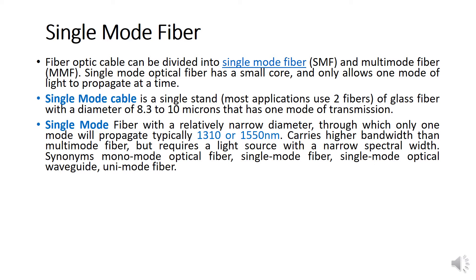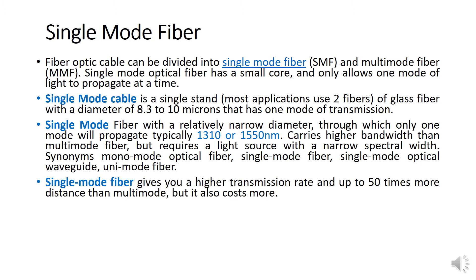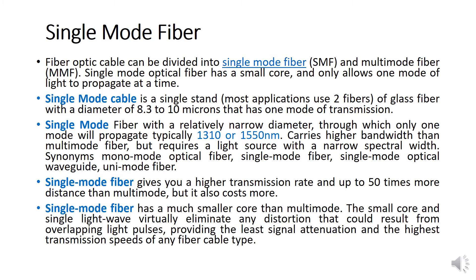Single mode gives a higher transmission rate, up to 50 times more distance than multi-mode, which makes the cost more beneficial depending on the company and project. Single mode fiber has a much smaller core, and the single light path virtually eliminates distortion from overlapping light pulses, providing less signal attenuation and the highest transmission speed among fiber cable types.